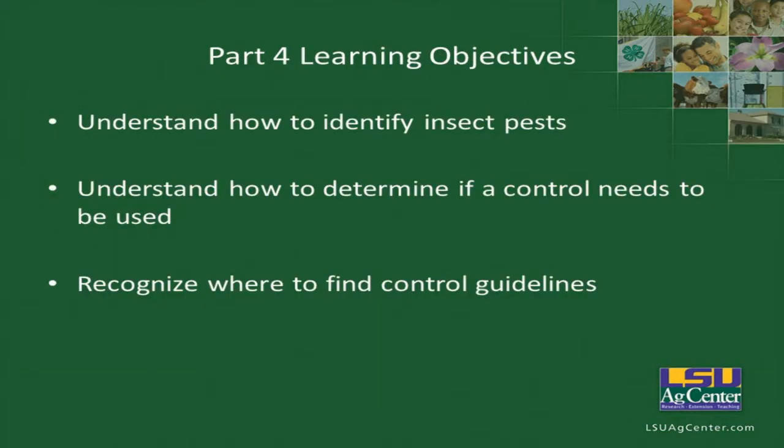We've covered how to identify insect pests, where to look for your control needs, and where to find the control guidelines. Now, let's quickly cover the main soybean insect pests in Louisiana. Early season, we have the three-cornered alfalfa hopper, which is controlled primarily by using insecticide seed treatments. As soon as soybeans are up out of the ground, you need to be checking for early season pests — primarily the three-cornered alfalfa hopper.